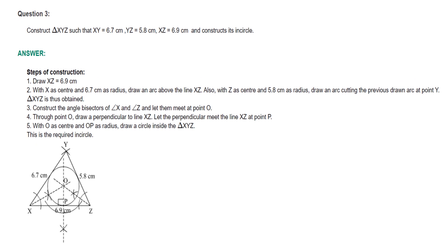Now coming to question number 3: constructing the incircle — I have already taught you, so you can do it. First, construct the triangle. Then draw the angle bisectors of any two angles. Here the angle bisectors of angle X and angle Z are drawn and let them meet at point O. Through point O, draw a perpendicular to line XZ. Let the perpendicular meet line XZ at point P. With O as center and OP as radius, draw a circle inside triangle XYZ. This is the required incircle.